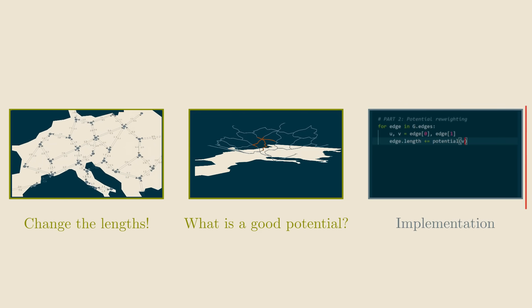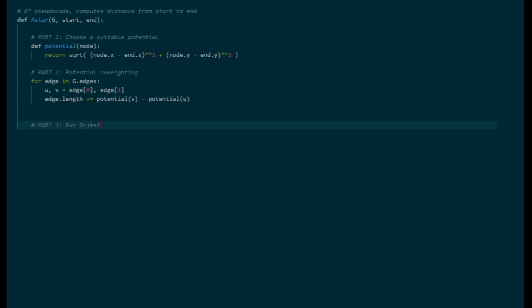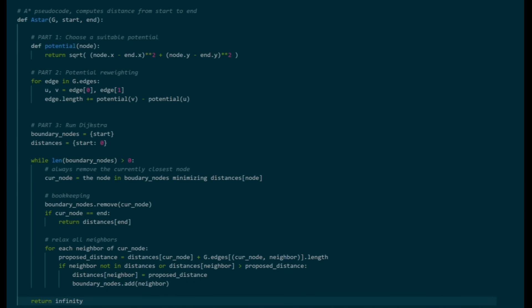Speaking of implementation, there is still one important piece of the puzzle remaining. Let's write down the pseudocode of our algorithm. We'll first write the function that computes the potential. Then, we apply the potential reweighting trick to change all edge lengths, and in the end, we implement Dijkstra's algorithm. This implementation of A-star is pretty bad, because in the potential reweighting part, we are iterating over all the edges in the input graph, which is horrible. Remember, looking at the whole graph is exactly what we're trying to avoid.